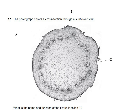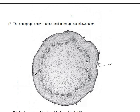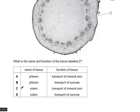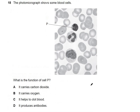Question 17: a cross-section of a sunflower stem shows tissue labeled Z. In the stem, xylem is on the inner side and phloem on the outer side of the vascular bundle. Tissue Z is xylem, which transports mineral ions, not sucrose. The answer is C.